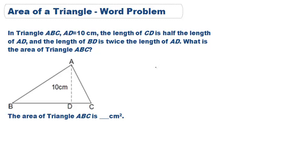Here's a tricky word problem asking us to solve for the area of a triangle. It says in triangle ABC, AD is equal to 10 centimeters. So that's this line right here. The length of CD is half the length of AD, and the length of BD is twice the length of AD. What is the area of triangle ABC?